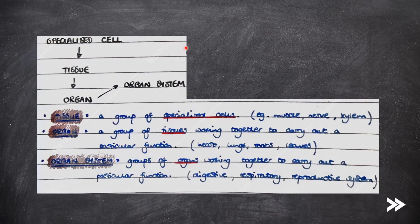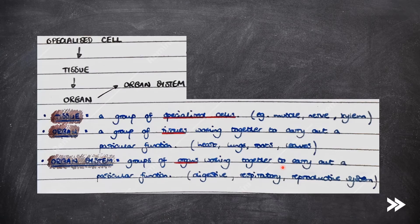A tissue is a group of specialised cells working together to perform a particular role — examples include muscle, nerve, and xylem. A group of tissues working together to carry out a particular function is called an organ, for example the heart, lungs, roots, and leaves. A group of organs working together to carry out a particular function is known as an organ system, for example the digestive, respiratory, or reproductive systems.